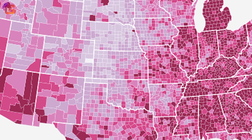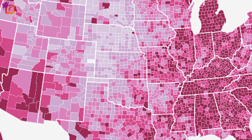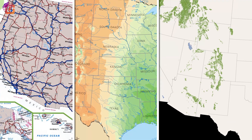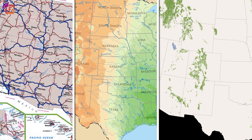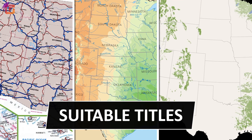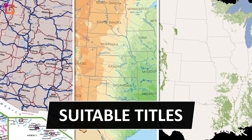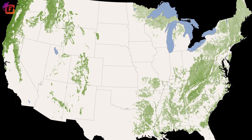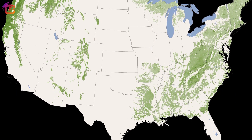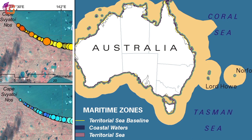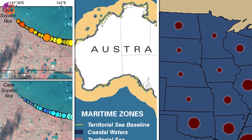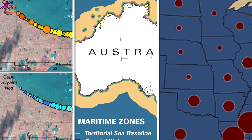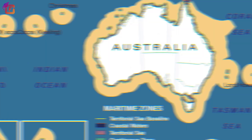Maps that focus on specific information like road maps, rainfall maps, forest maps, etc. are called thematic maps. Suitable titles are shown on the basis of information provided in these maps. Thematic maps also represent basic features like coastlines, boundaries and places, which are used only as a point of locational reference for the phenomenon being mapped.